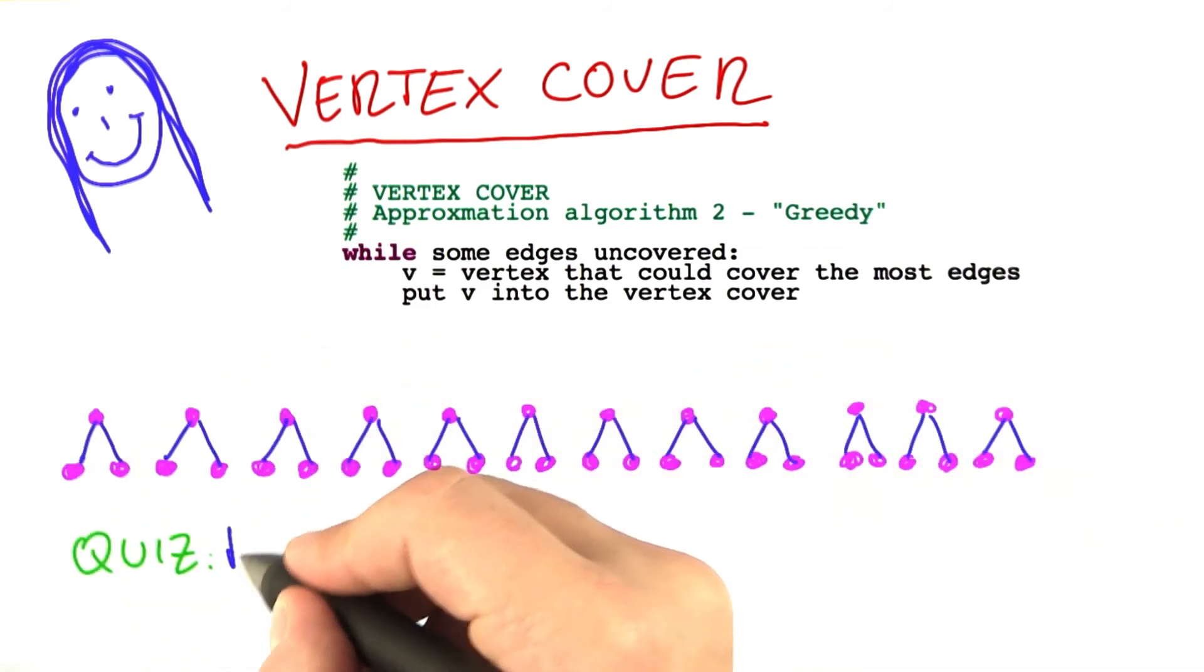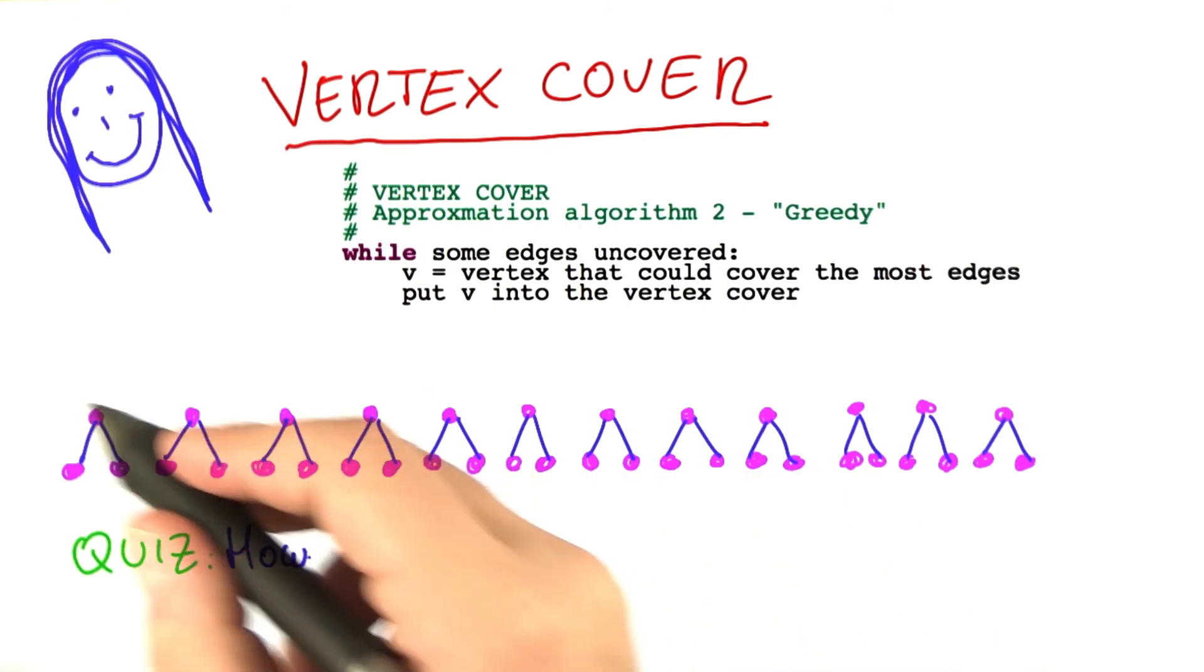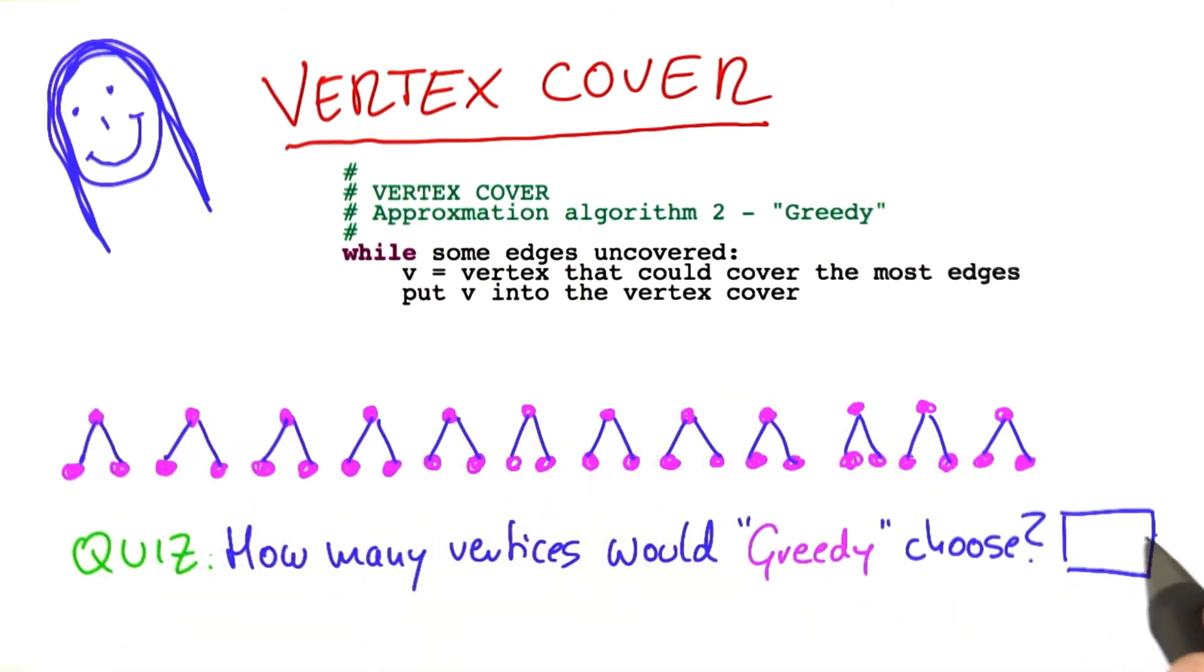Now, my question to you is, how many vertices would Greedy choose if we gave it this graph here as an input? And please enter your answer here.